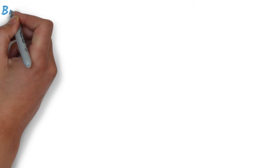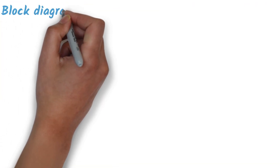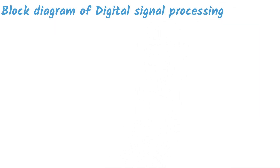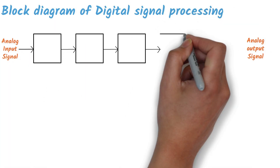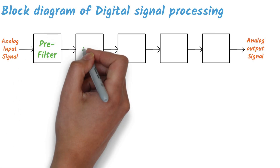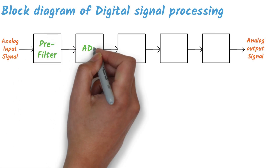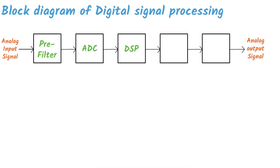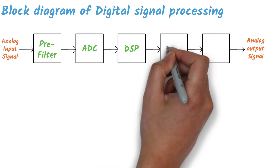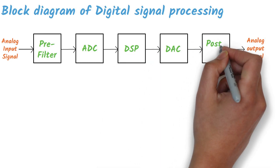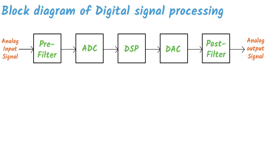Now, let us understand the block diagram of a DSP system. There are mainly five blocks in the diagram: pre-filter, analog-to-digital converter (ADC), digital signal processor (DSP), digital-to-analog converter (DAC), and post-filter.